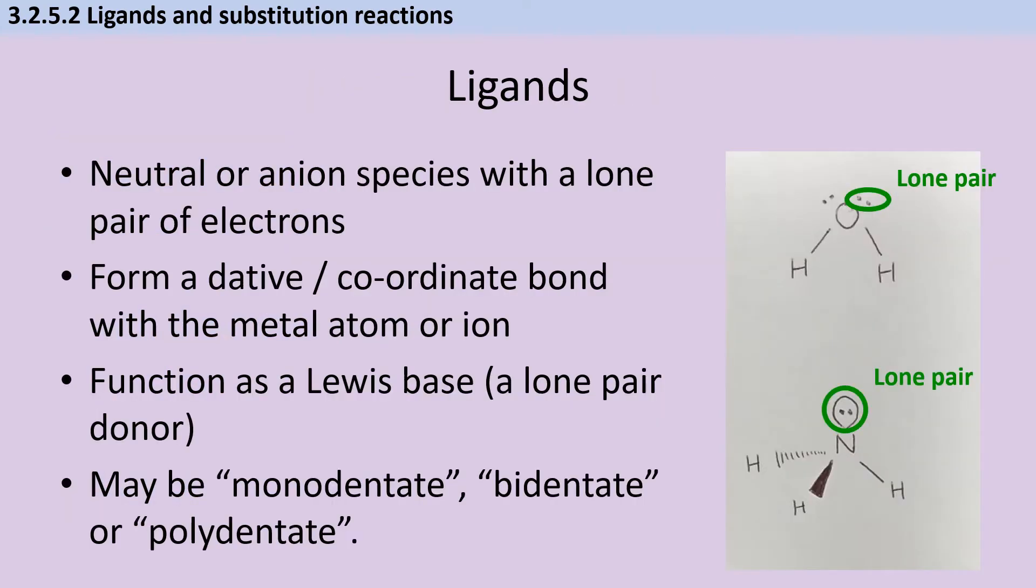Ligands can be both neutral molecules or anions, they just need a lone pair of electrons. They can be classified according to the number of bonds they make as monodentate, bidentate, or polydentate.